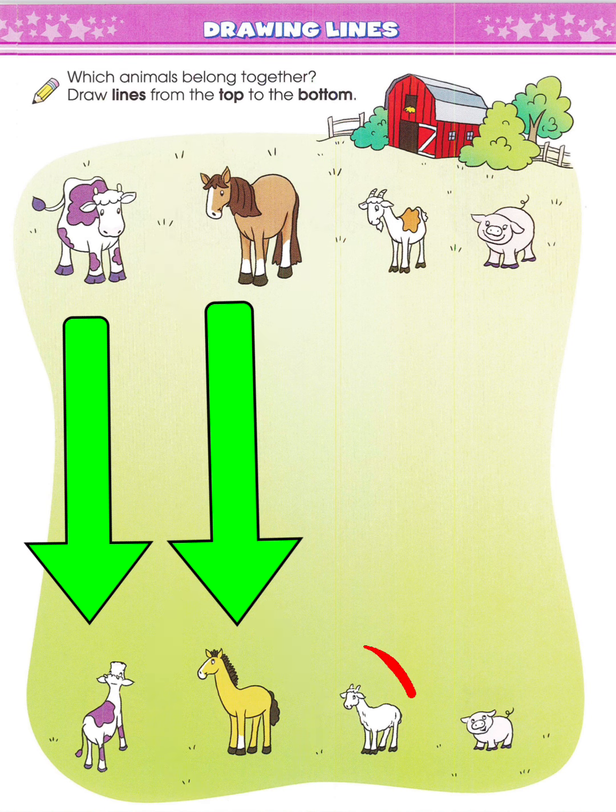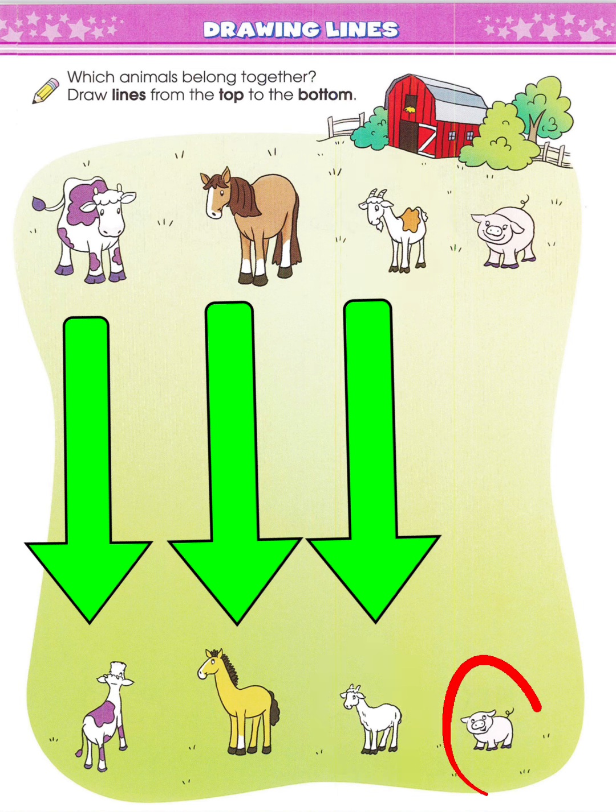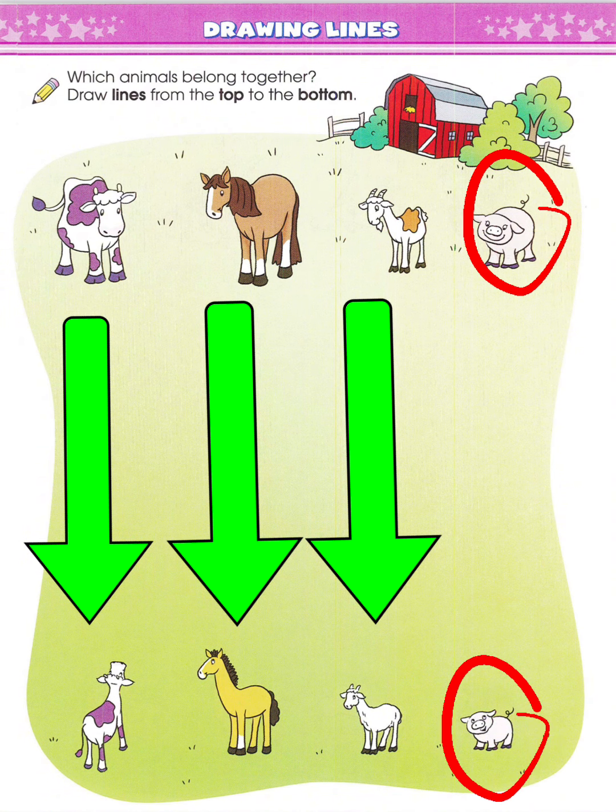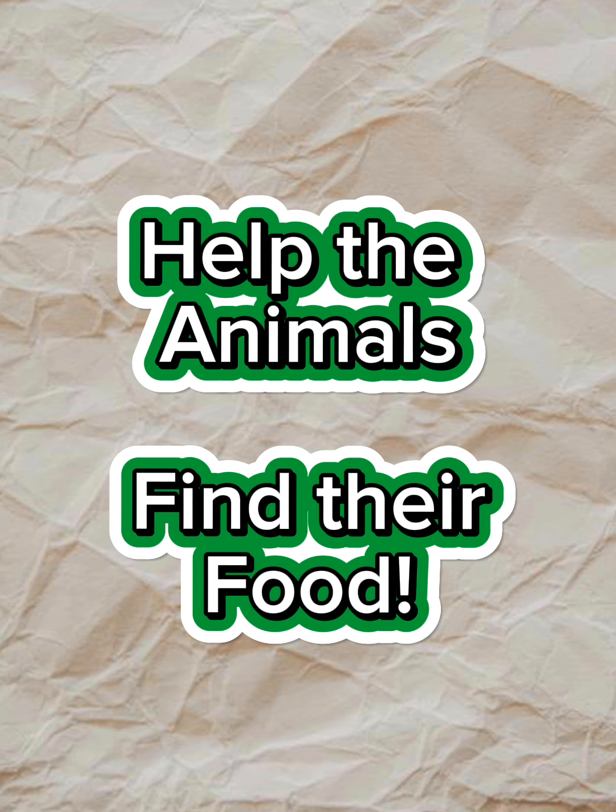I see a baby goat. The goat belongs with mom. I see a baby pig. The pig belongs with mom. Help the animals find their food.